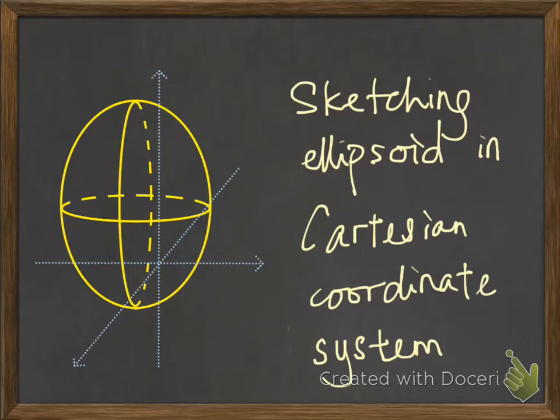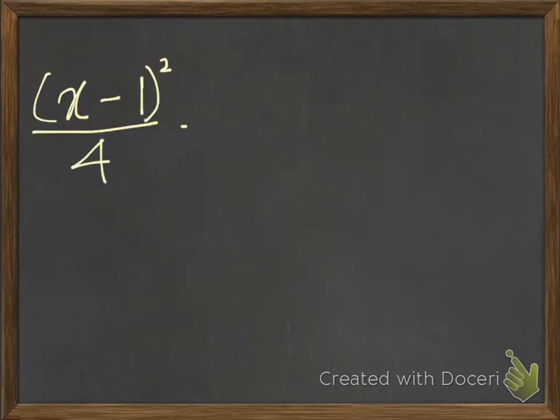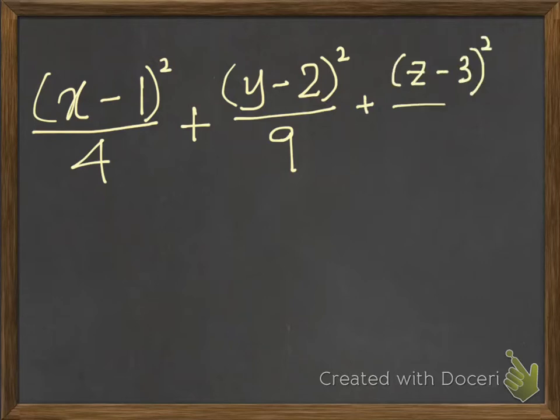So, the ellipsoid has a center. The center will be the reference point. Now, let's take a look at one of the equations of ellipsoid. Let's say we have (x-1)²/4 + (y-2)²/9 + z²/16 = 1.